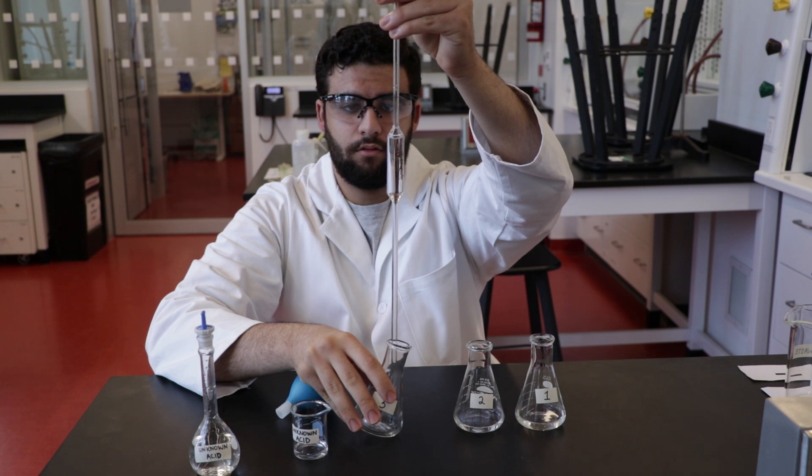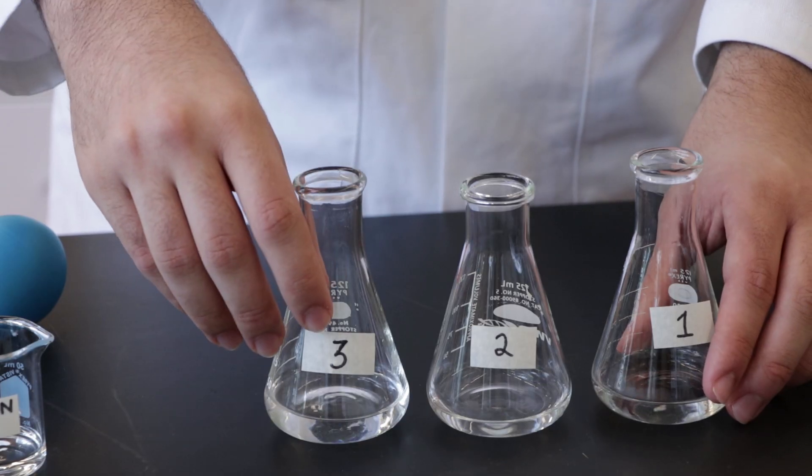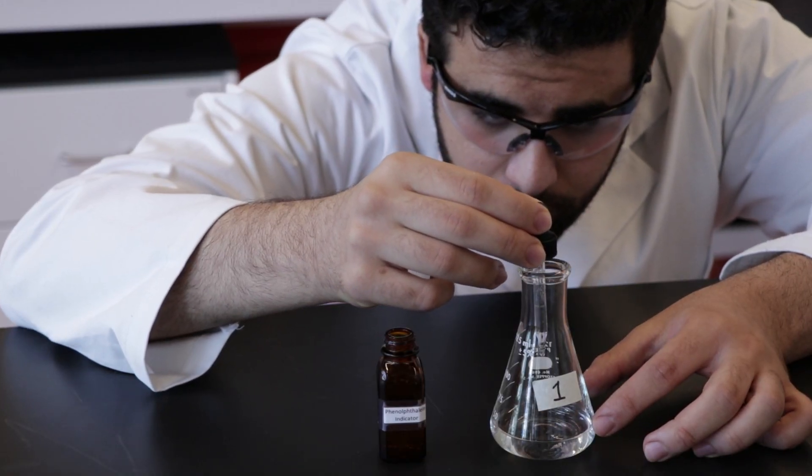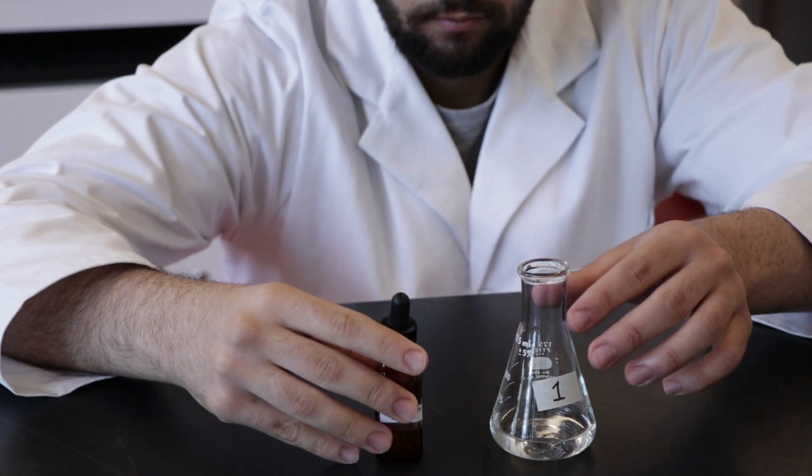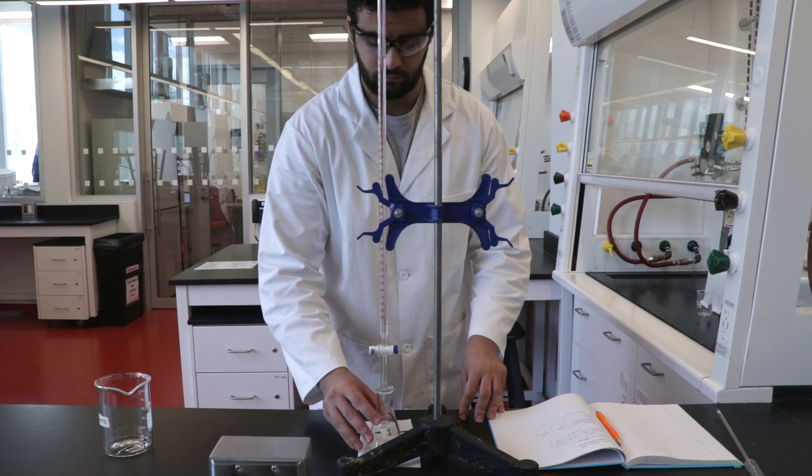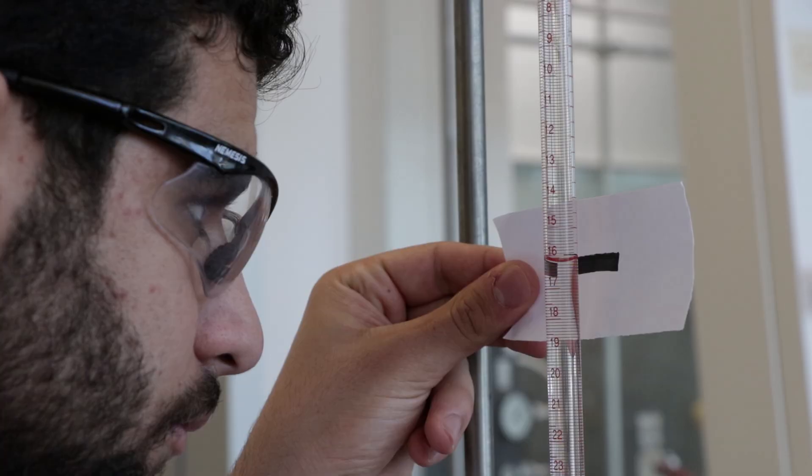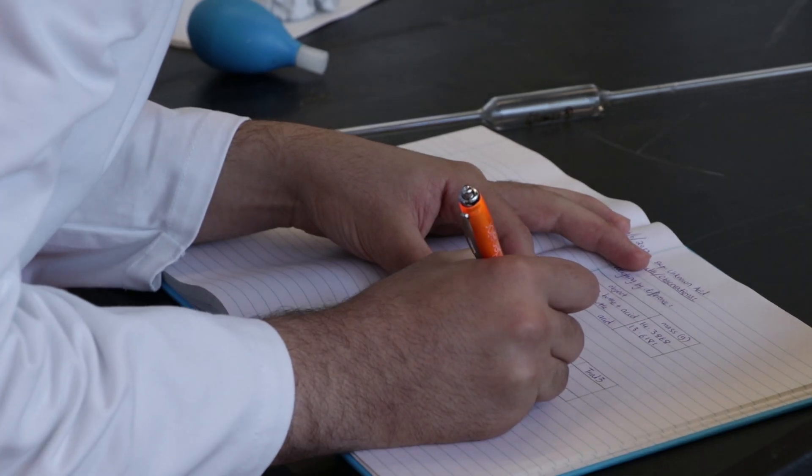Pipette three 25 ml aliquots of your standard solution into three labeled Erlenmeyer flasks. Add two drops of phenolphthalein indicator into each flask. Place the first flask under the burette and take the initial reading before beginning the titration. All readings from the burette should be recorded to two decimal places.